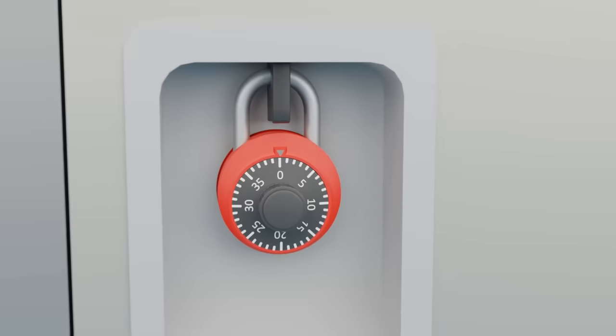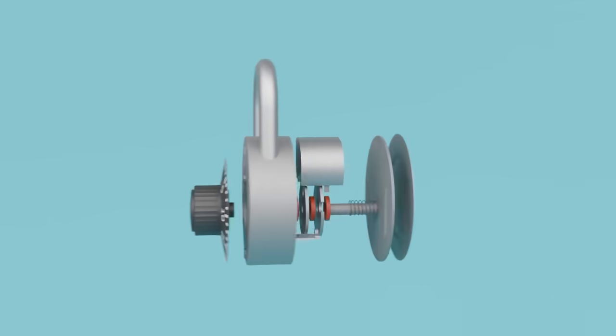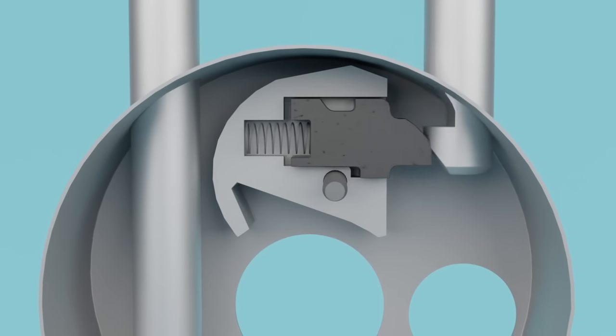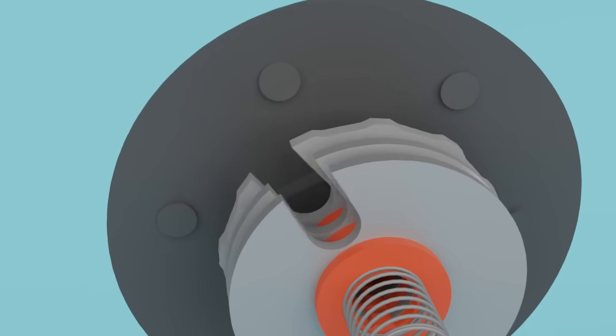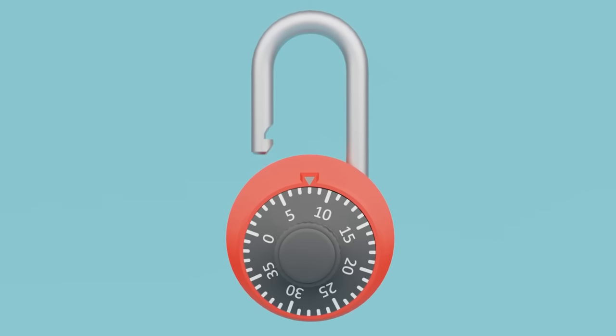In this video, we're going to use 3D animation to show the inside of a combination lock. I'm going to go over exactly why putting in a three-digit combination allows us to open the lock. Let's check it out.